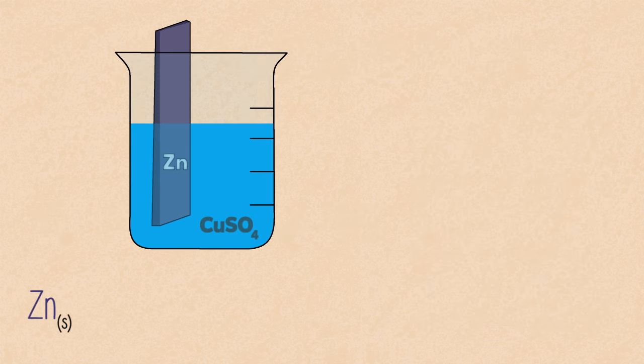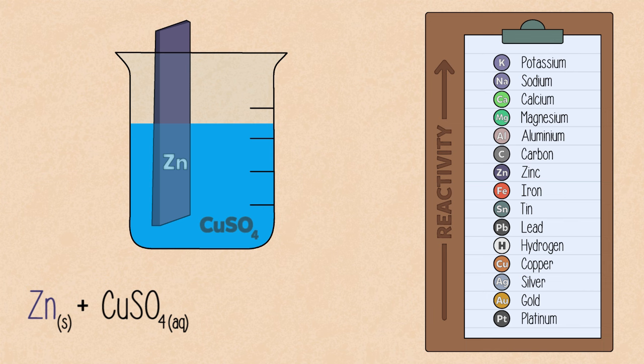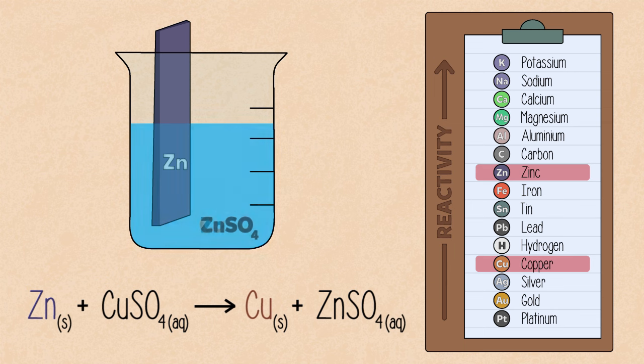Here is an example. When we add a strip of zinc to an aqueous solution of copper sulfate, we can see from the reactivity series that zinc is more reactive than copper, and can therefore displace copper in copper sulfate. We can see this happening over time. The bright blue copper sulfate solution gradually turns into colorless zinc sulfate, and copper metal begins to deposit on the zinc strip.